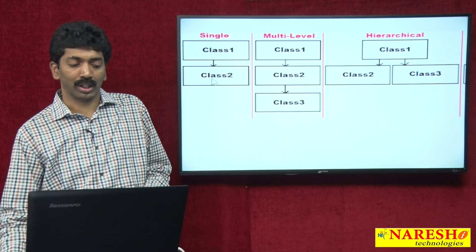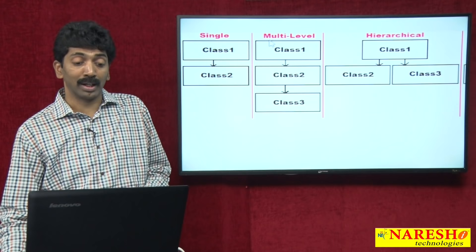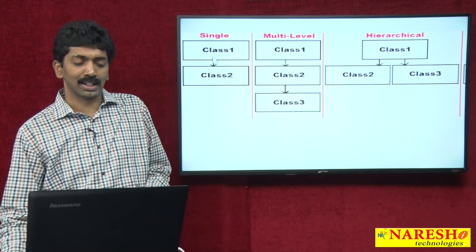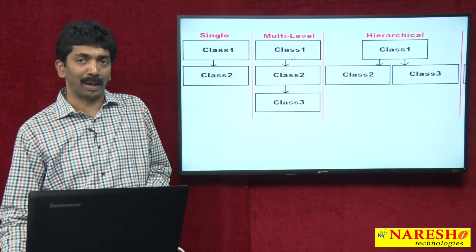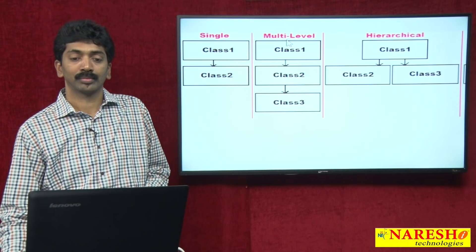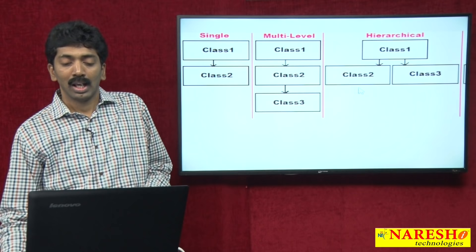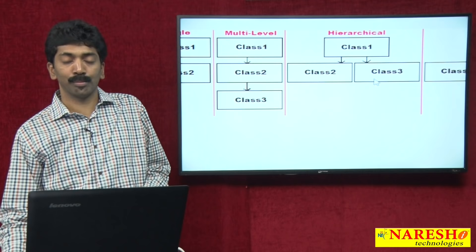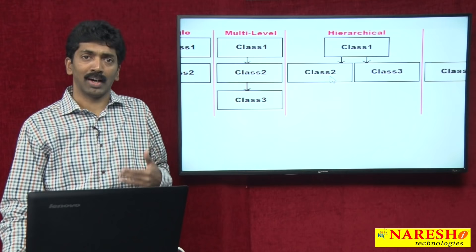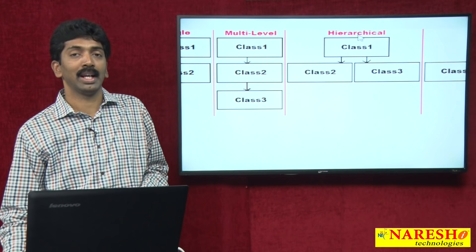The five types are: first, single inheritance — Class2 inherits from Class1, one parent. Second, multilevel inheritance — a linear hierarchy like Object → Class1 → Class2 → Class3; similar to single but with more than two classes. Third, hierarchical inheritance — one parent class having multiple child classes, just like parents having multiple children who are all children of the same mother and father.